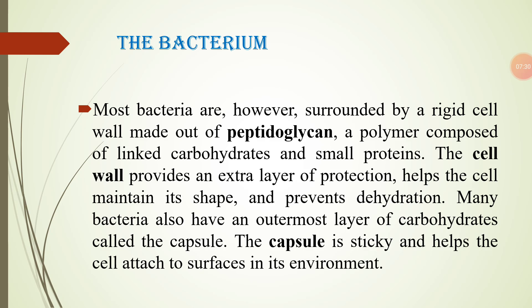The cells of blue-green algae resemble bacterial cells in nearly all respects. However, they have photosynthetic lamellae or thylakoids of unit membrane. These contain pigments that may be blue, red, or green.